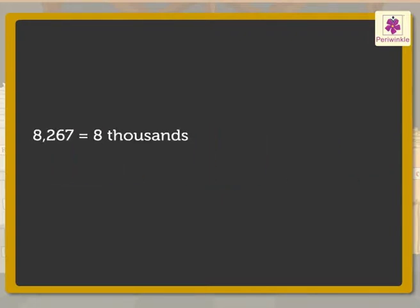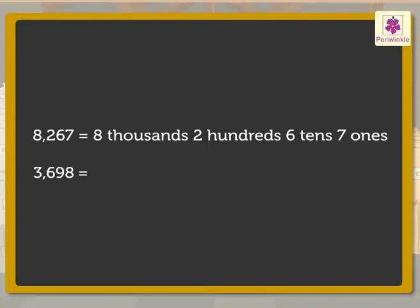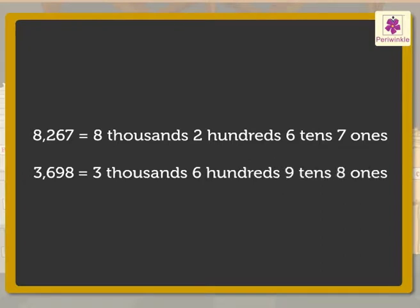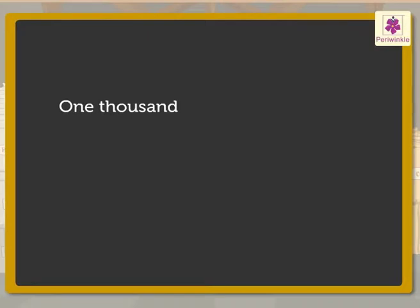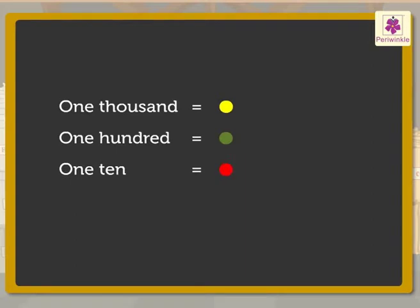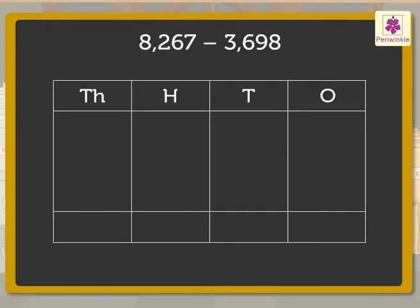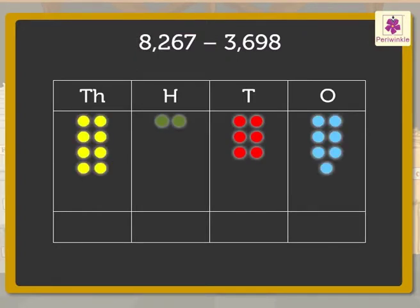Thus, there are 8 thousands, 2 hundreds, 6 tens and 7 ones in the bhajra sacks, and 3 thousands, 6 hundreds, 9 tens and 8 ones corn sacks. Let us represent each thousand with a yellow dot, each hundred with a green dot, each ten with a red dot and each one with a blue dot. So, the number 8,267 will be represented with dots like this.